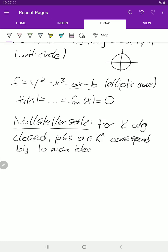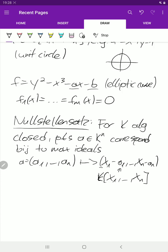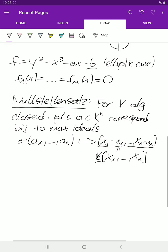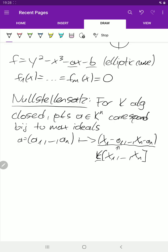The statement is that point A in k to the n correspond bijectively to maximal ideals. Let's see the bijection. We have this point A, which maps to the ideal x1 minus a1 and xn minus an. The ideal generated by these elements in the polynomial ring. And it's quite easy to see that these things here are maximal ideals.